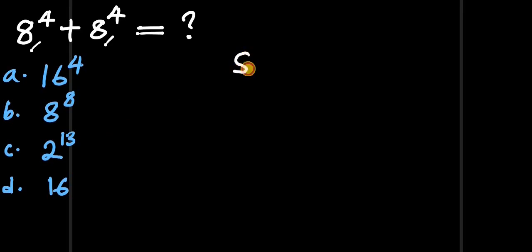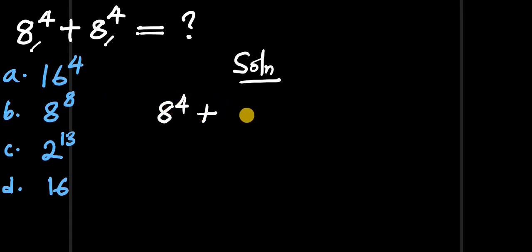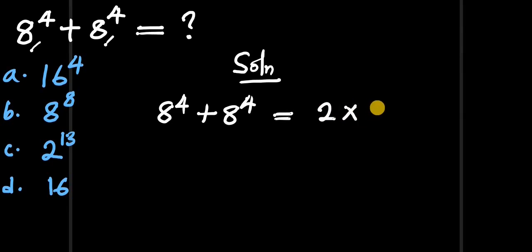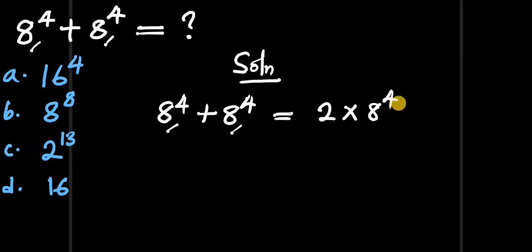For our solution: 8 to the power of 4 plus 8 to the power of 4 is simply like writing 2 times 8 to the power of 4, because we have one 8 to the power of 4 and another 8 to the power of 4 — so it's like saying 2 times 8 to the power of 4.